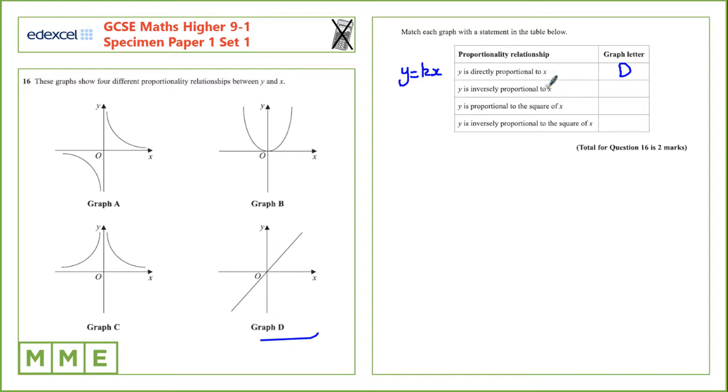The next one, y is inversely proportional to x, is something of the form y equals k over x. We've got two potential candidates for this, A and C, and A is the one for normal inverse proportionality.